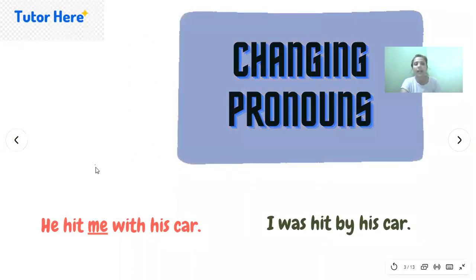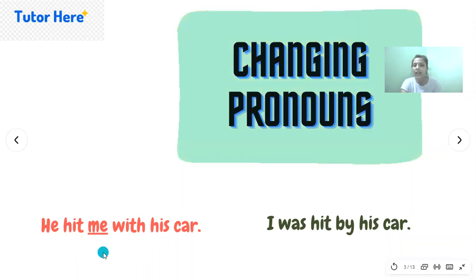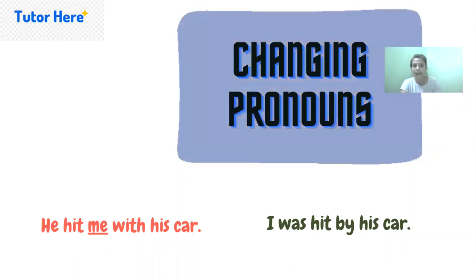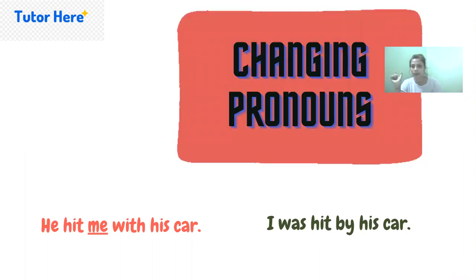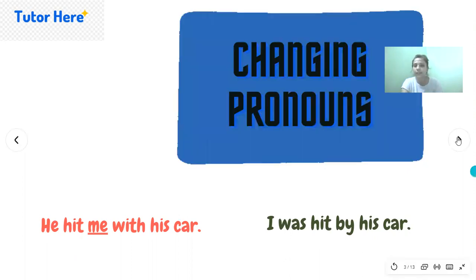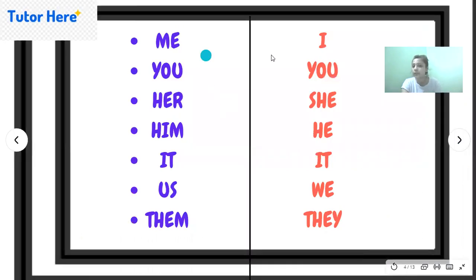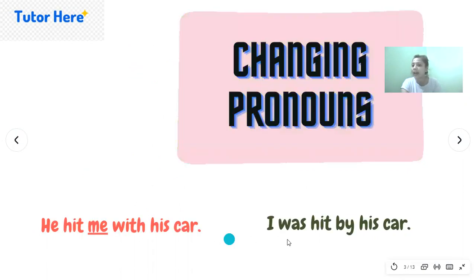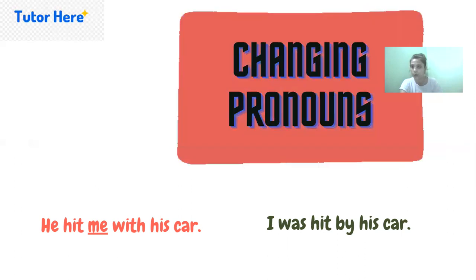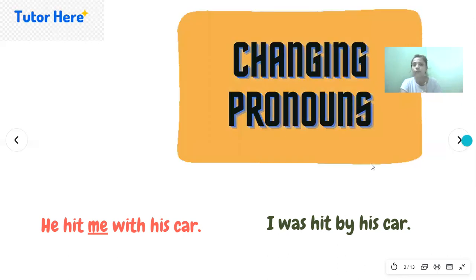Let's understand this with an example. Consider the active voice: 'He hit me with his car.' Here 'me' is the object. Now to change this into passive voice, go back to the table — what is in front of 'me'? It is 'I'. So you change 'me' to 'I' in the passive voice: 'I was hit by his car.' You have to memorize this.